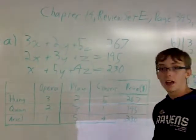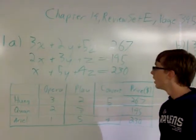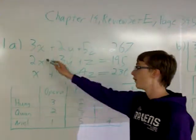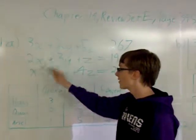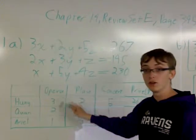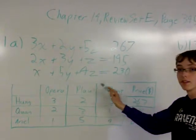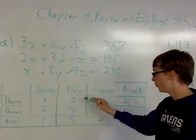Question 1A asks for this to be expressed mathematically. What you do is you express the operas as variable X, thus creating 3X, 2X, and X for 3, 2, 1 operas. First, you make the play as the Y variable, 2Y, 3Y, 5Y for 2, 3, 5.